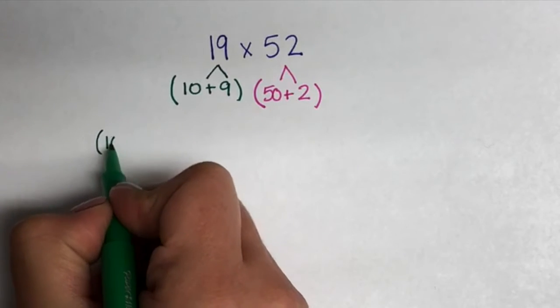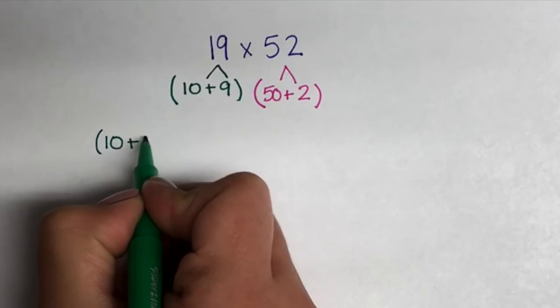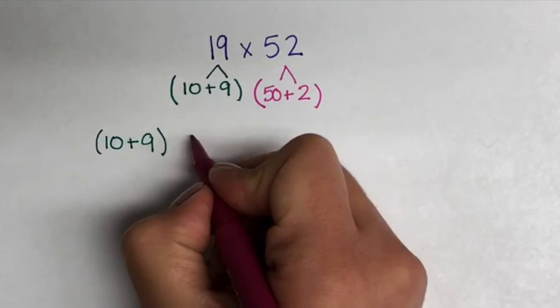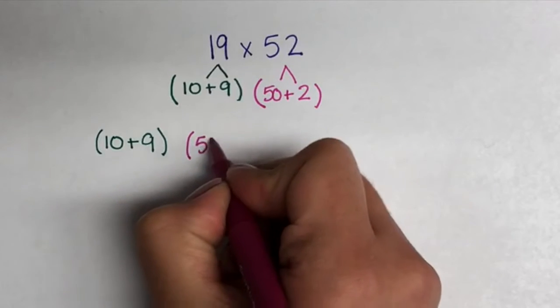Here we are going to rewrite 10 plus 9 and 50 plus 2. Remember, these numbers represent 19 and 52.